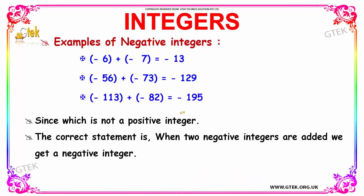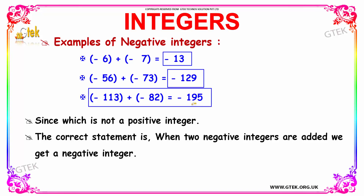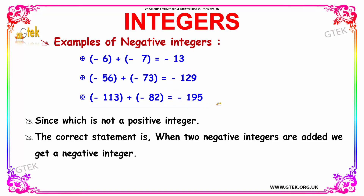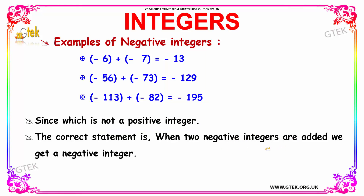Let us see some examples for negative integers. Minus six plus minus seven will give you minus thirteen, which is a negative integer. Minus fifty-six plus minus seventy-three will give you minus one hundred and twenty-nine, which is a negative integer. Minus one hundred and thirteen plus minus eighty-two will give you minus one hundred and ninety-five. The addition of two negative integers will give you a resultant negative integer, since you are not adding positive integers. So when two negative integers are added, we get a negative integer as the result.